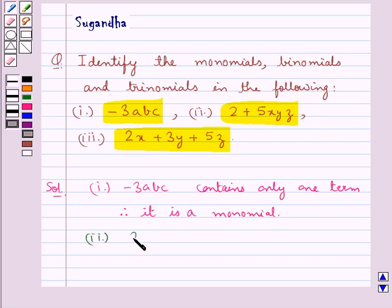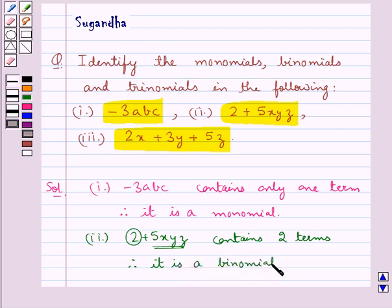Then we have 2 plus 5xyz. This expression contains two terms which are 2 and 5xyz and therefore we say that it is a binomial.